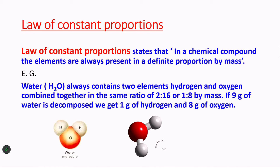Let us consider a water molecule. You all know the formula of water — that is H2O. Two hydrogen atoms and one oxygen atom are present. Now, water always contains two elements — hydrogen and oxygen — combined together in the same ratio, that is 2 is to 16. The number 2 represents the two hydrogen atoms, each with atomic mass 1, and 16 is the atomic mass of oxygen.